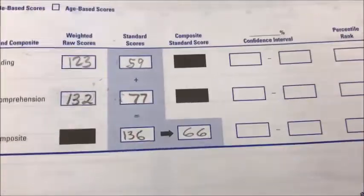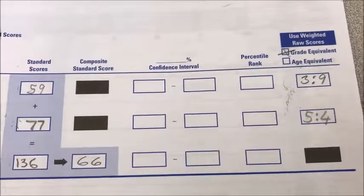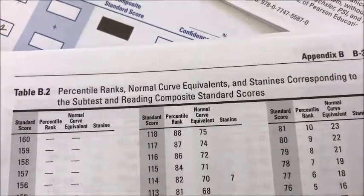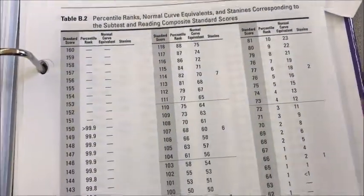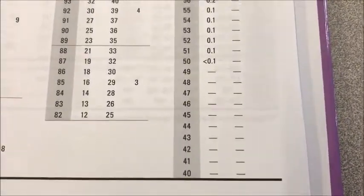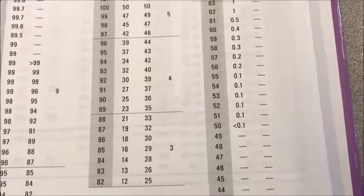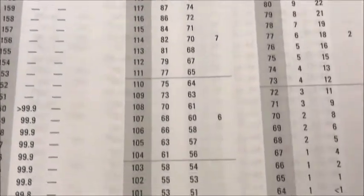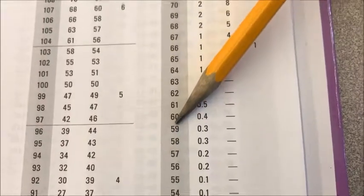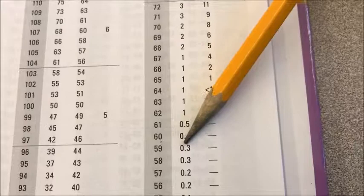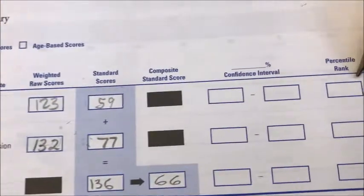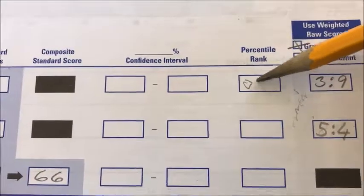Now we want to take those standard scores and find the percentile rank. This is appendix B, B3, and it says at the top 'percentile rank.' Notice this table starts at the highest number and goes down to the lowest, which is 40. We find our first number — standard score 59 — in the gray column. Right across from it, the percentile rank is 0.3. That is the number we put in the percentile rank column.